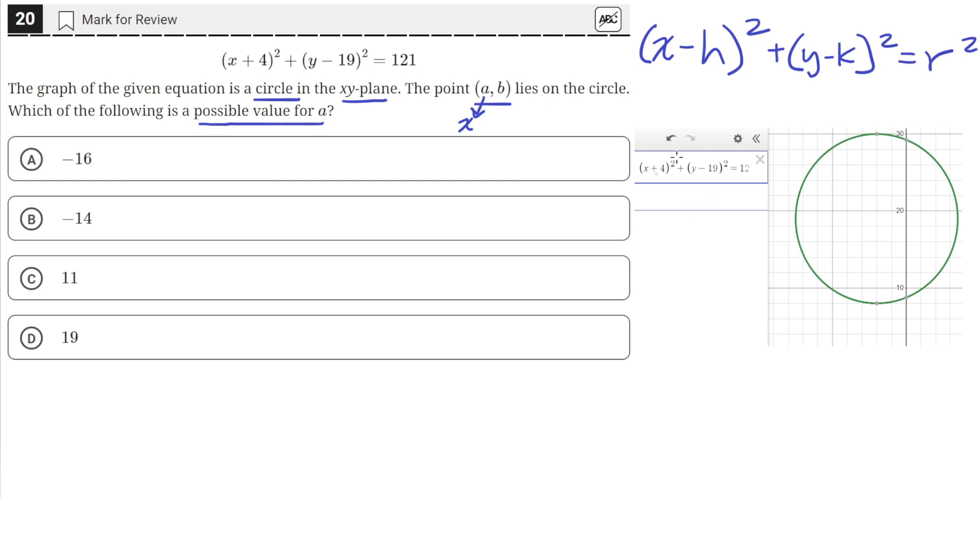Here, h and k are the coordinates of the center of the circle. In this case, since we have a positive 4 and in the formula it's negative h, h is equal to negative 4.